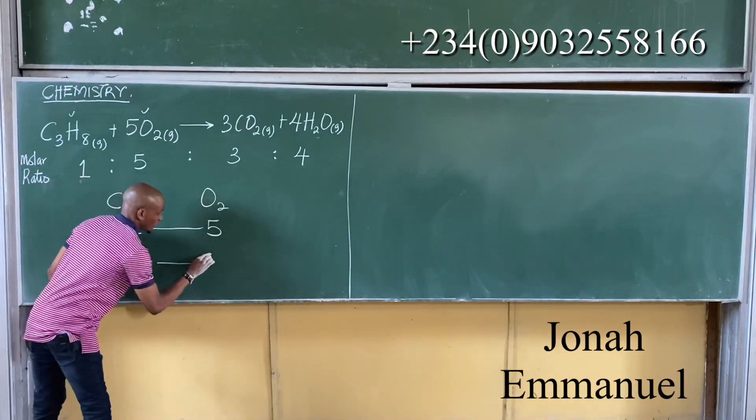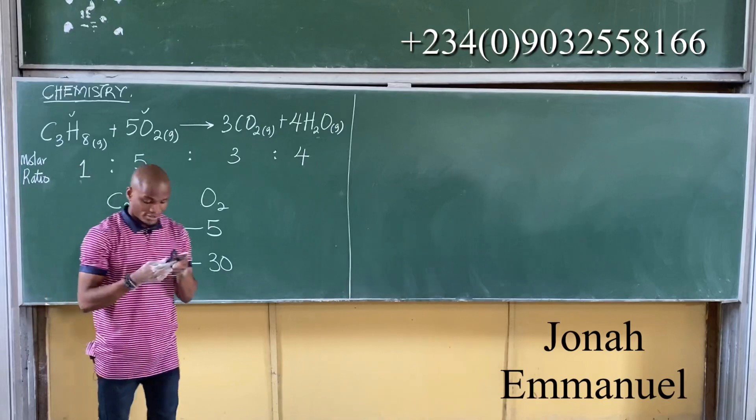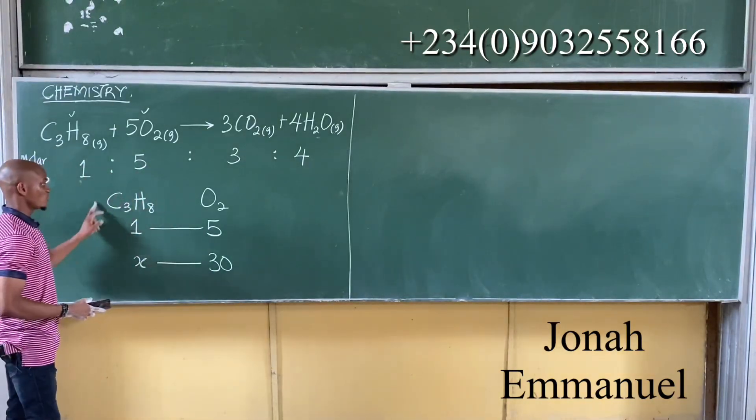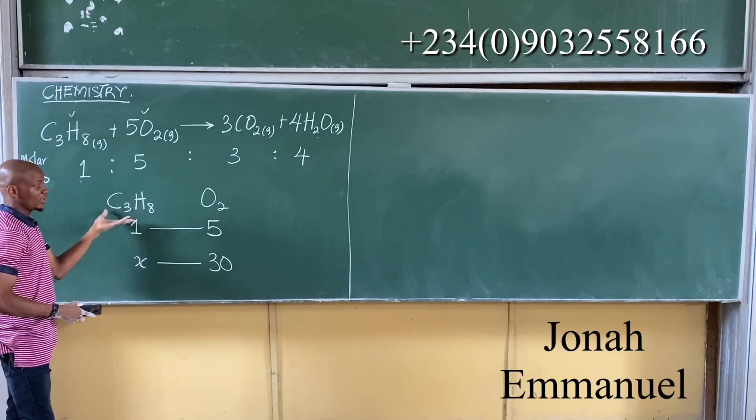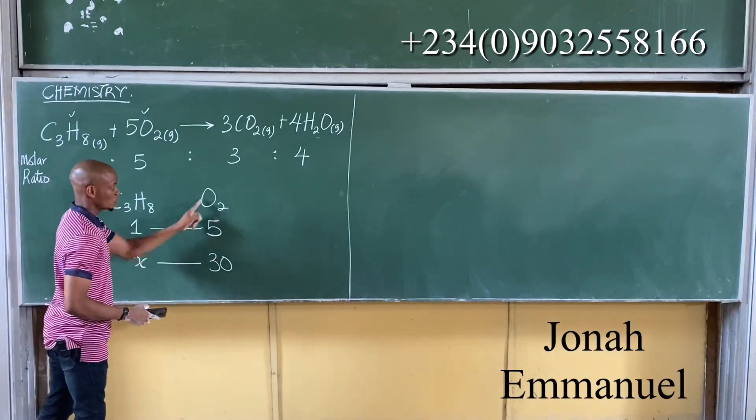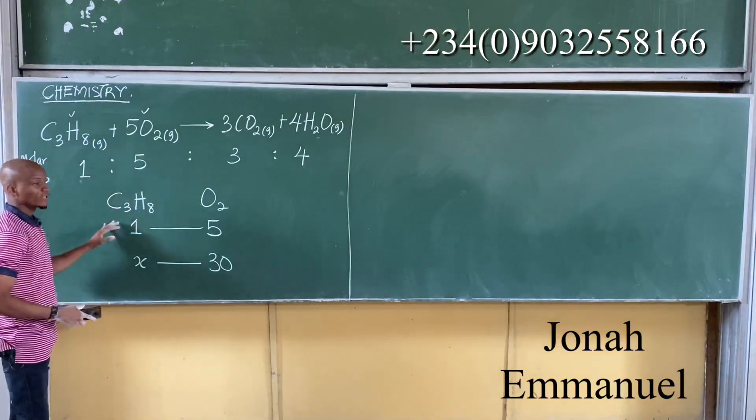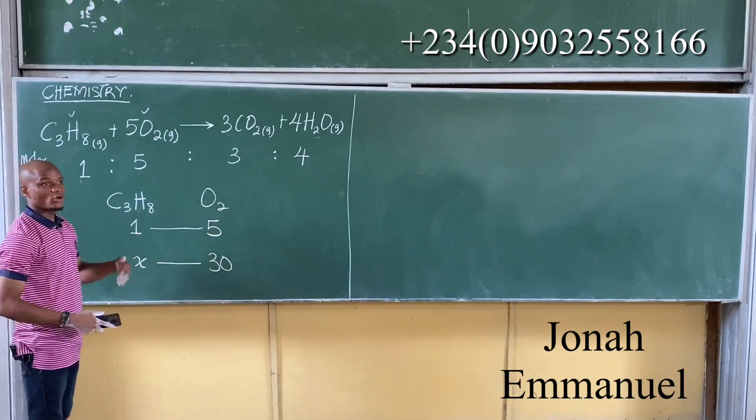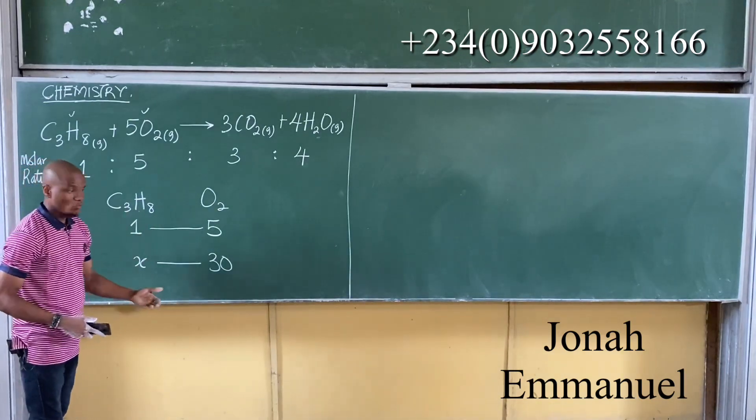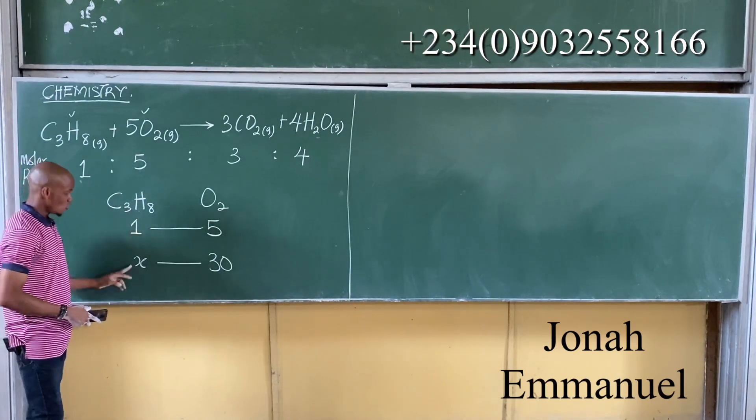So oxygen, 30 moles of oxygen. Alright, so how many moles of propane would be left unreacted when 20 moles of propane is combined with 30 moles of oxygen? So the particular reagent with which we are looking for the amount of unreacted moles, we call it X for now. Since this is propane, we call it X for now.